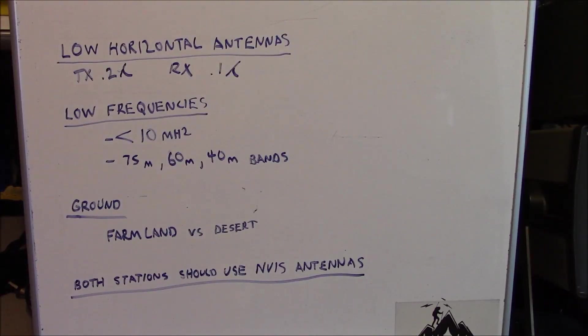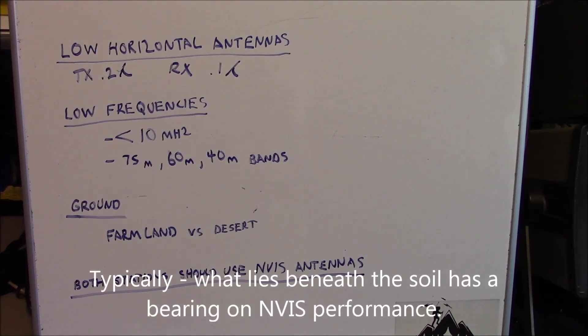Here's some very basic principles of NVIS antenna theory. NVIS antennas typically are low, horizontally polarized antennas. And by low, I mean mounted low and close to the Earth. Transmit and receive antennas, if separate, which is desirable, would be two-tenths of a wavelength for the transmit and receive antenna one-tenth of a wavelength above the soil. This makes it easier for us because it's easier to put up an antenna lower to the ground than it is higher to the ground. The frequencies used in the HF spectrum are below 10 megahertz and the typical amateur frequencies that are suited to this type of operation are the 75, 60, and 40 meter amateur bands.